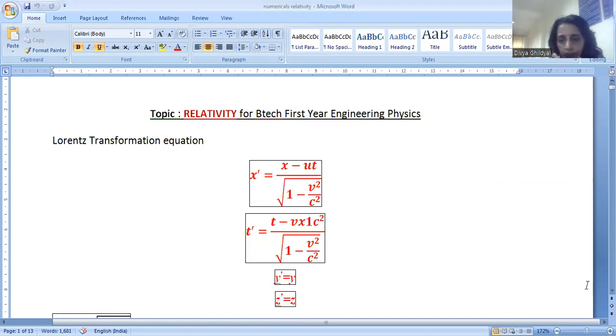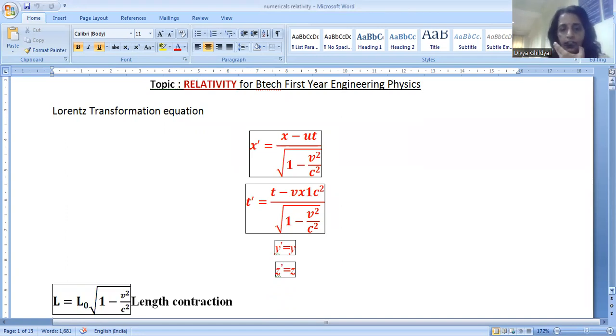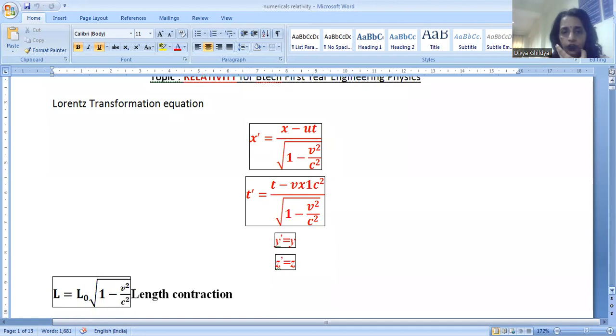First quickly the formulas. Lorentz transformation equation: x dash is equal to x minus ut upon under root 1 minus v square by c square, where v is velocity of object under observation, c is velocity of light 3 into 10 to the power of 8 meter per second, t is time, and x is your position of the coordinate in the inertial frame of reference, x dash in the non-inertial frame.